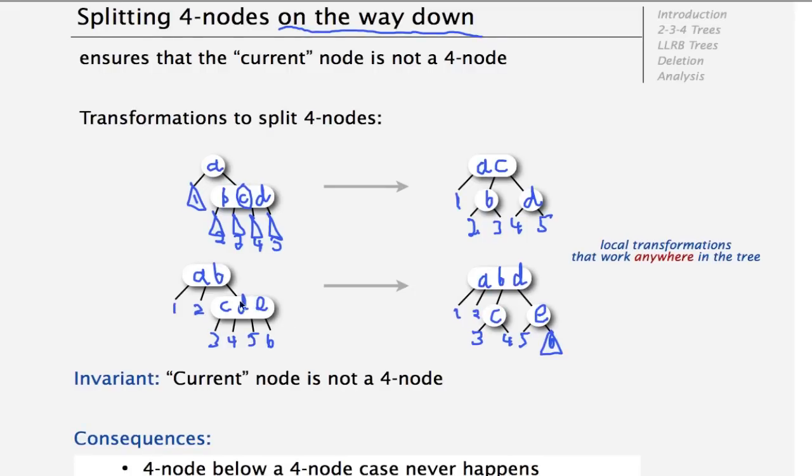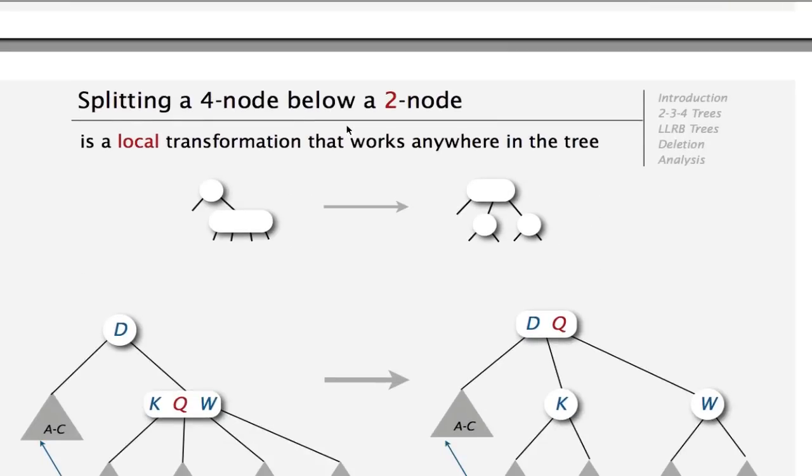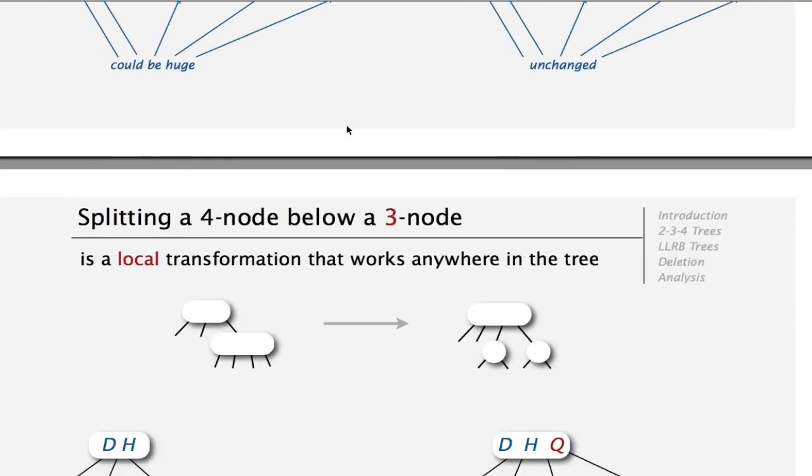The only time that this won't work is if the node above the node that we see is also a 4-node. But that can't happen because we're splitting on our way down. So here is the argument with the subtrees.